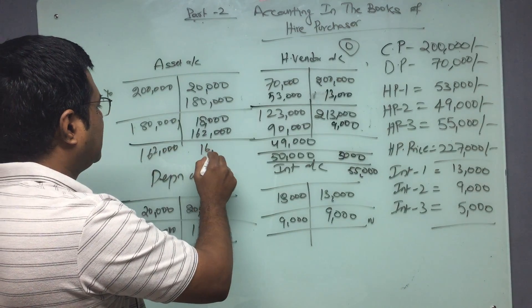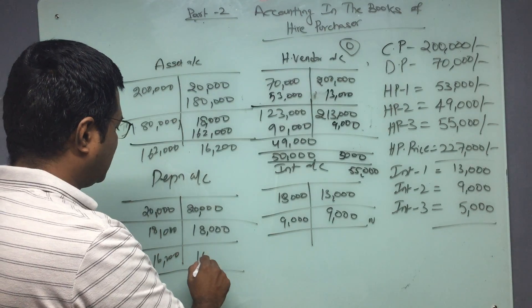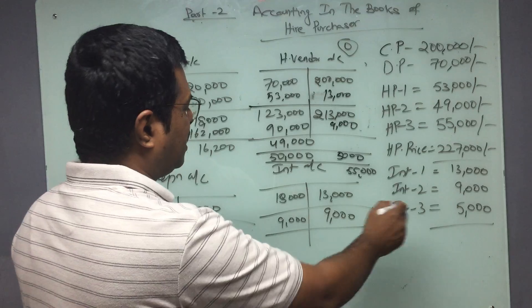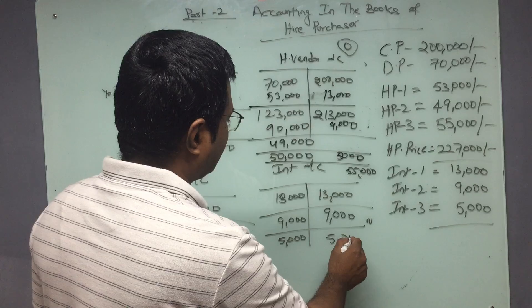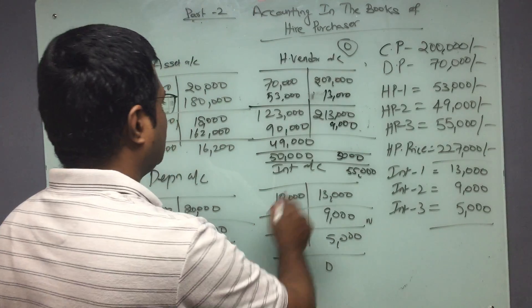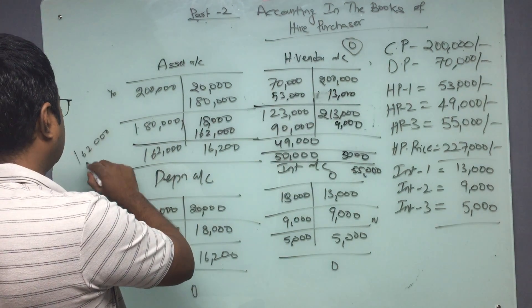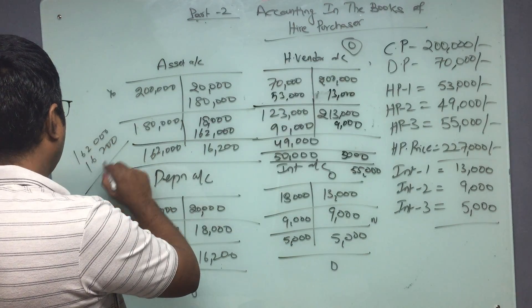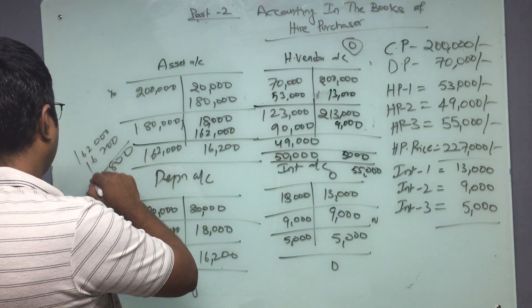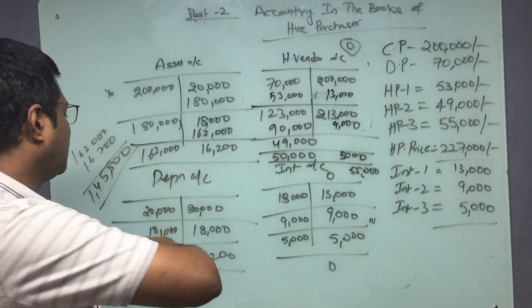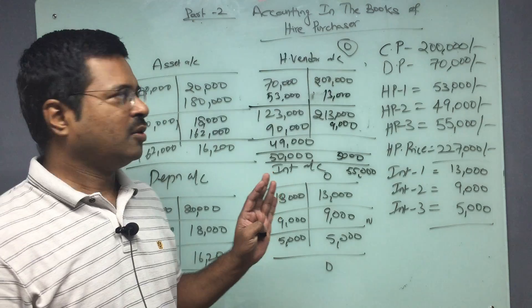At the beginning of the third year, depreciation is 16,200, which I will transfer to P&L. Interest of 5,000 will also be transferred to P&L and becomes zero. Vendor is zero. My asset remains at 1,62,000 minus 16,200, giving a closing asset balance of 1,45,800 at the end of the third year. This is how entries are done under the cash price method.